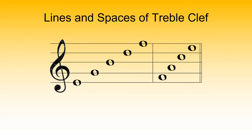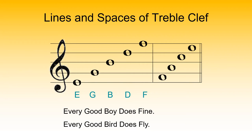Here we have a G clef or treble clef. Looking at those different notes — the lines and the spaces — we find they are E, G, B, D, and F for the lines, and the spaces are F, A, C, E. The musical alphabet is simply A, B, C, D, E, F, G. On the treble clef, E is the very starting line, and after G we go back to A.